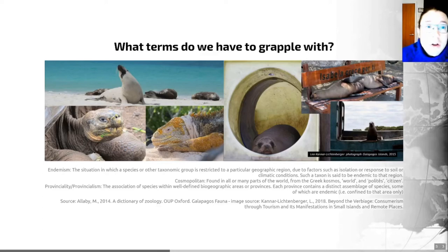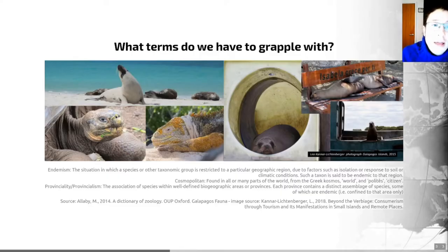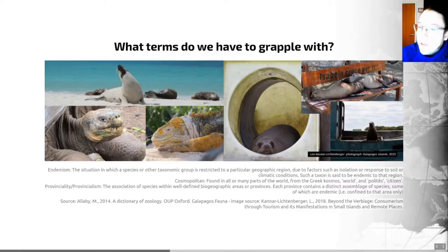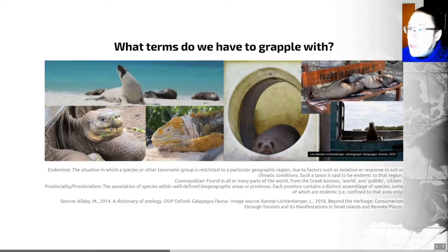Let's define some key terms. An endemic species is one that is local or regional, and the property of being endemic is called endemism. Endemism is the situation in which a species or other taxonomic group is restricted to a particular geographic region due to factors such as isolation or response to soil or climatic conditions. For example, the species shown here are all endemic to the Galapagos Islands.